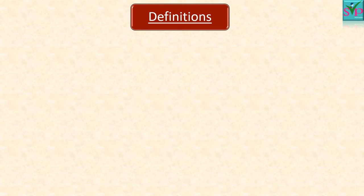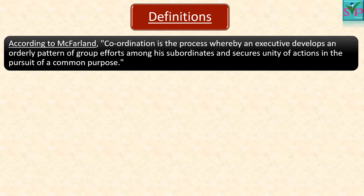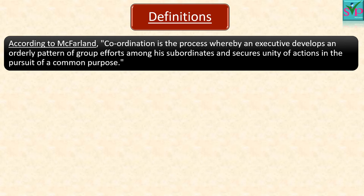Now let us study various definitions of coordination. According to McFarland, coordination is the process whereby an executive develops an orderly pattern of group efforts among his subordinates and secures unity of actions in the pursuit of a common purpose. Here, the top-level management prepares a plan, distributes the work in a proper order among employees, and also ensures that they are working unitedly to achieve the goal of the organization.